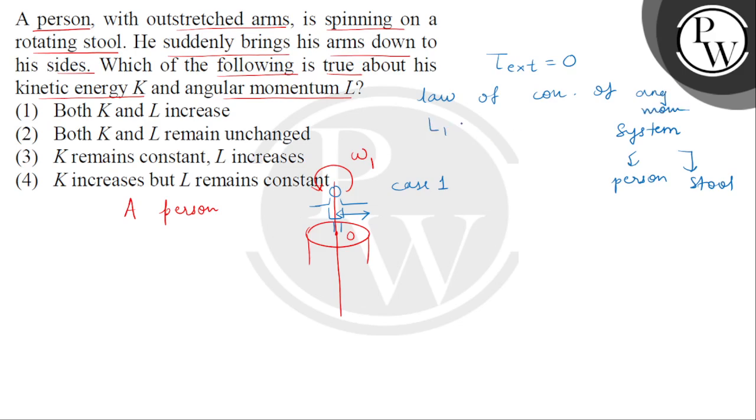It means L1 equals L2. Now what will L1 be? In the first case, I1 omega 1 where we're saying that I1 is the moment of inertia of this person and the stool. We take them combined.